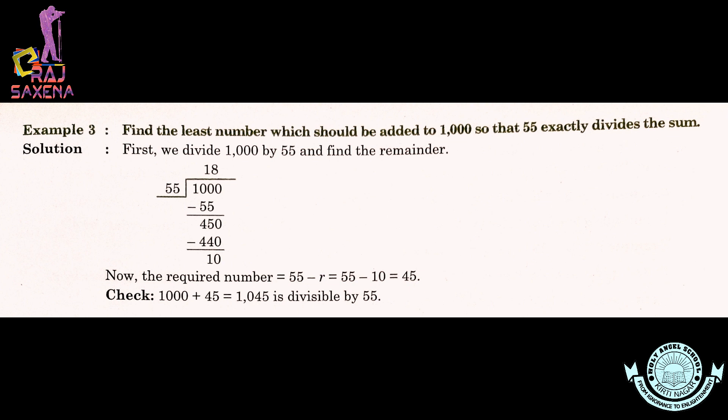Now example number 3: Find the least number which should be added to 1000 so that 55 exactly divides the sum. Hamein ek aisa chhota number dhundhna hai jisko 1000 mein add kar dein toh woh 55 se perfectly divide ho jaye. Solution: Pehle 1000 ko 55 se divide karein aur remainder find karein — remainder aata hai 10. Ab is remainder ko divisor se minus karein: 55 − 10 = 45. Yeh 45 ko dividend 1000 mein jodne par milta hai 1045, jo 55 se perfectly divide hota hai. Therefore, least number jo 1000 mein add karna tha woh hai 45.